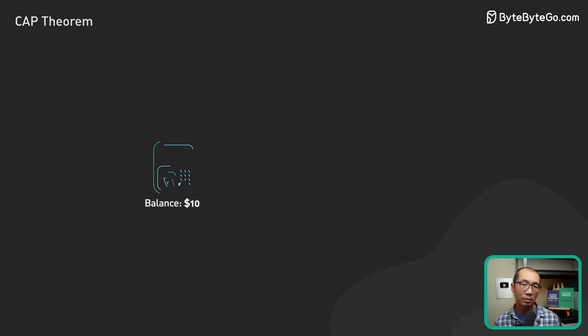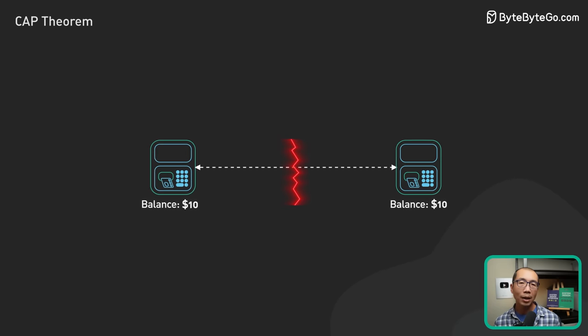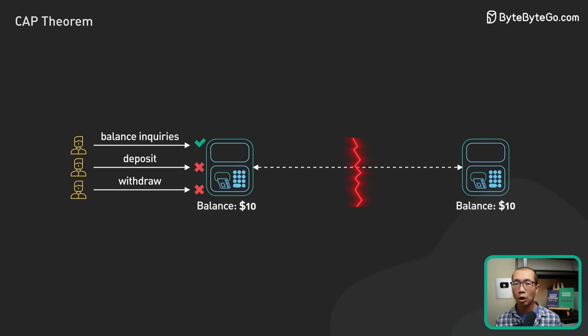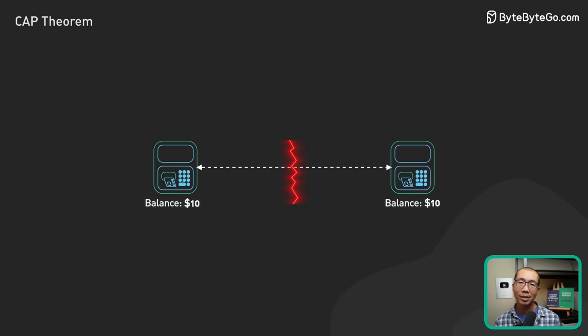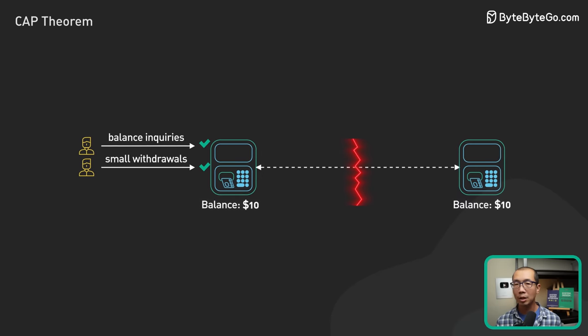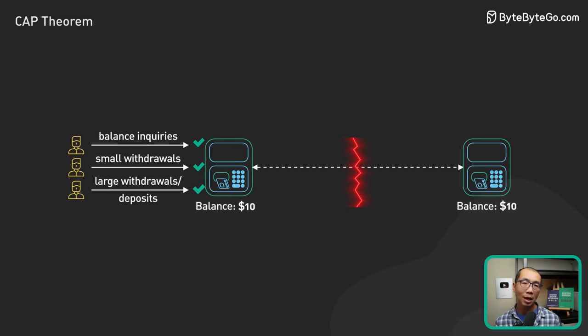Now back to the bank example. During a network partition, the ATM could allow only balance inquiries to be processed while deposits and withdrawals are blocked. Alternatively, the bank could implement a hybrid approach. For example, the ATM could allow balance inquiries and small withdrawals to be processed during a partition but block large withdrawals and deposits until the partition is resolved.